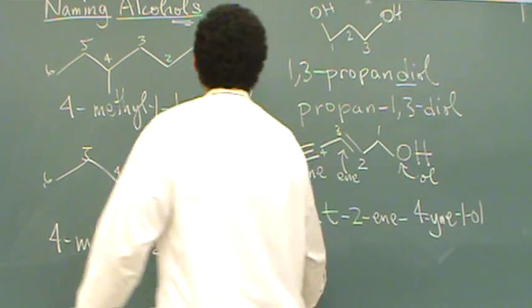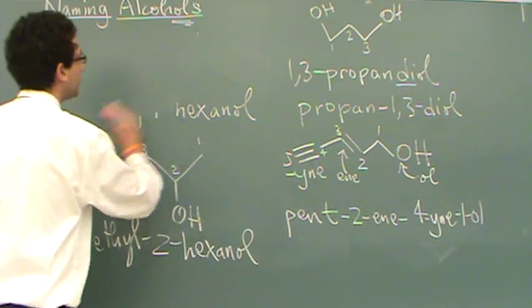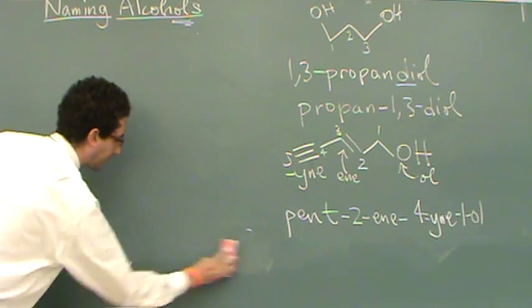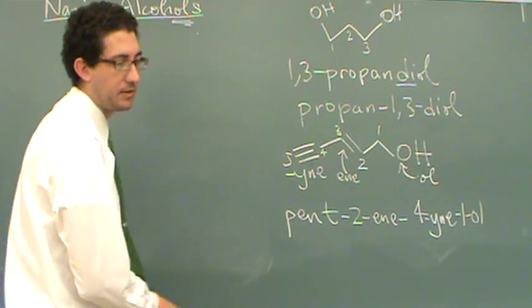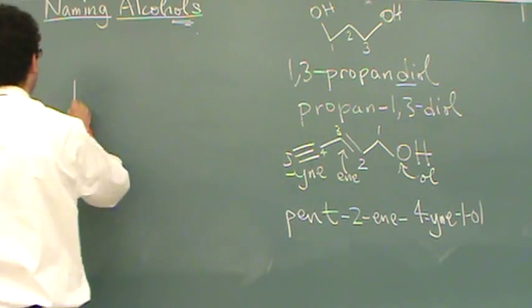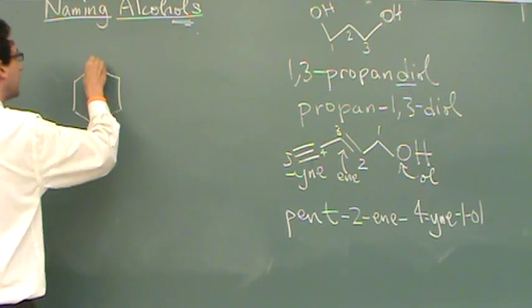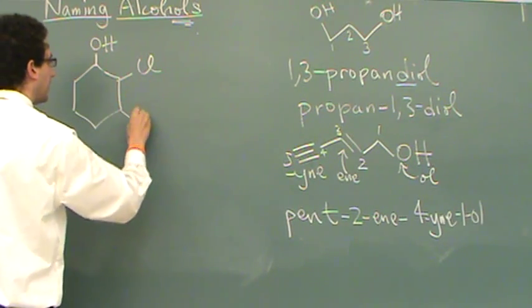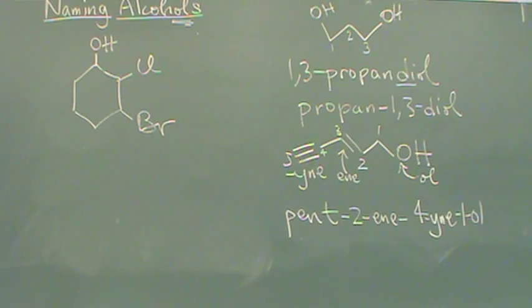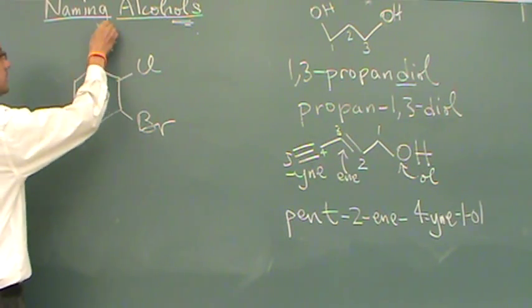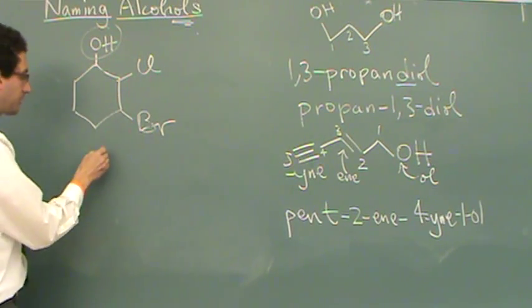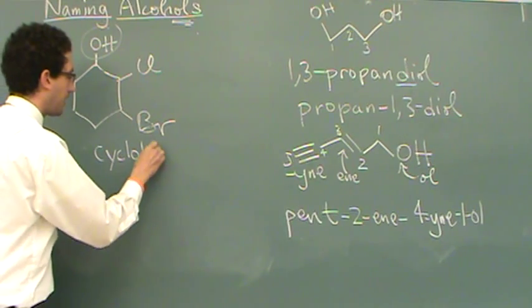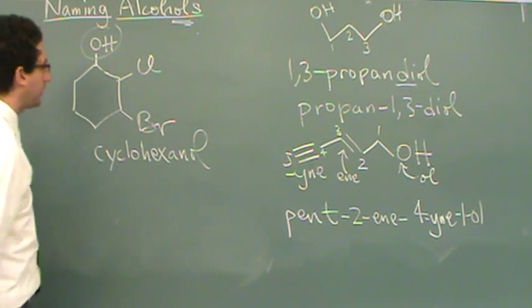If you have, let me just do one more example, just so you can see it. If you have a cycloalkane, or really, like a cyclohexane here and an OH substituent, and then you have some other substituents, let's say you have a Cl and a Br, something like that. How would you name this? This is a little bit different. Here you have to remember you have a cyclohexanol.